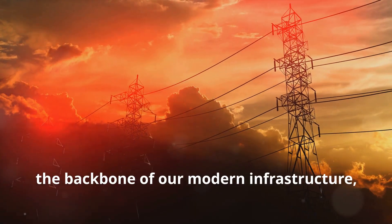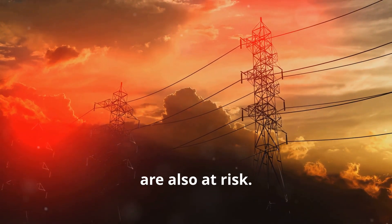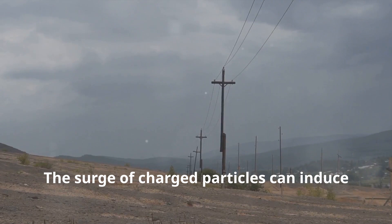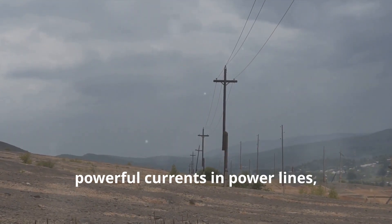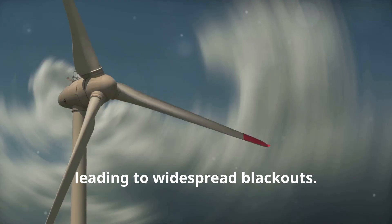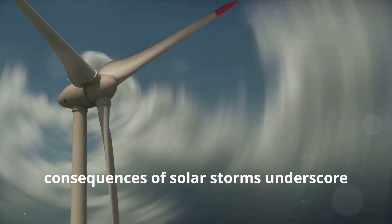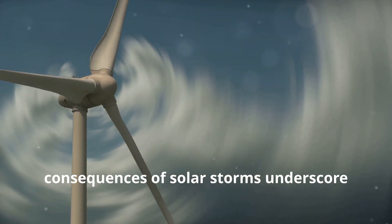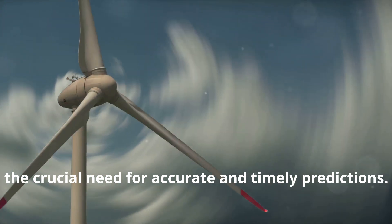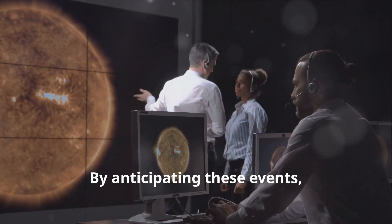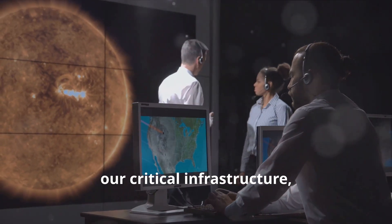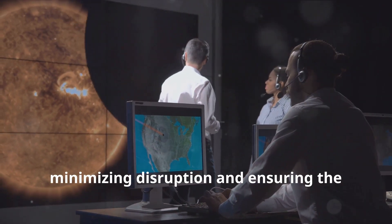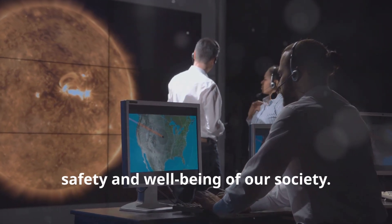Power grids, the backbone of our modern infrastructure, are also at risk. The surge of charged particles can induce powerful currents in power lines, leading to widespread blackouts. The potential economic and societal consequences of solar storms underscore the crucial need for accurate and timely predictions. By anticipating these events, we can take proactive measures to protect our critical infrastructure, minimizing disruption and ensuring the safety and well-being of our society.